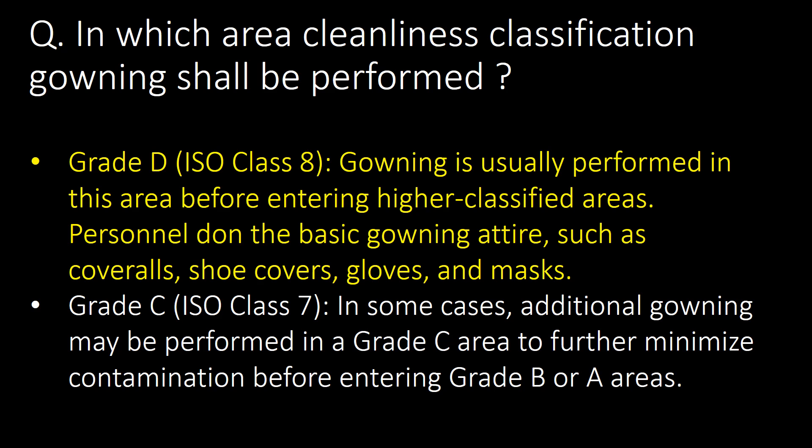This is a very frequently asked question: in which area cleanliness classification should gowning be performed? Grade D or ISO Class 8 — gowning is usually performed in this area before entering higher classified areas, where personnel don the basic gowning attire such as coveralls, shoe covers, gloves, and mask. Grade C or ISO Class 7 area — in some cases, additional gowning may be performed in Grade C area to further minimize contamination before entering Grade B or A areas.